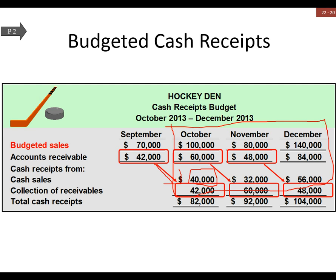40% of this month's sales is added into that as well. Our accounts receivable for October slides over into November, November's slides into December, and December's will slide on into January as we roll the budgets forward. This line is the cash we get as soon as we make the sales — that's automatic. The ARs roll forward a month and drop into our cash flow a month later. Those are our cash receipts totals.